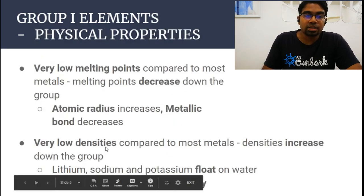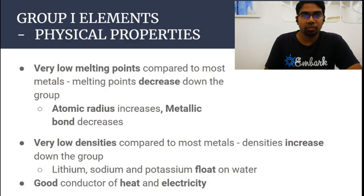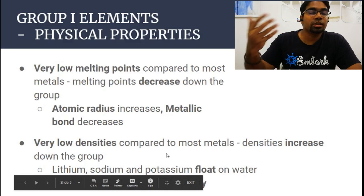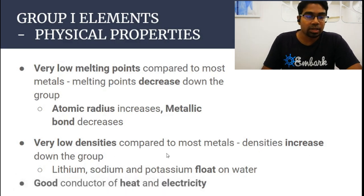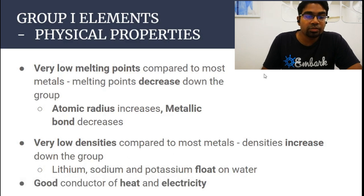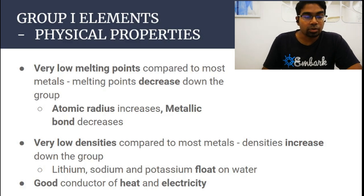Group 1 elements also have very low densities. When you typically think about metals, you think about a metal ruler sinking in water. However, for alkali metals, they show very low densities, though densities will increase down the group. As the relative atomic mass increases, the density will also increase. Lithium, sodium, and potassium have such low densities that they actually float on water.